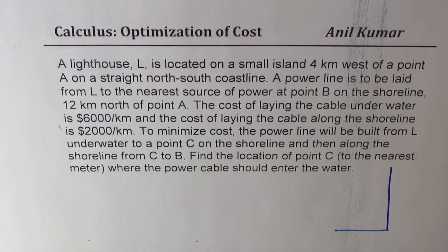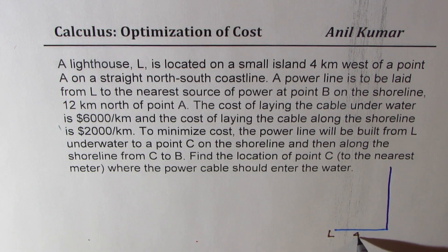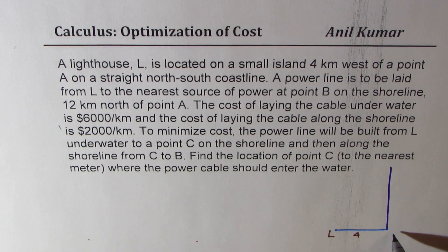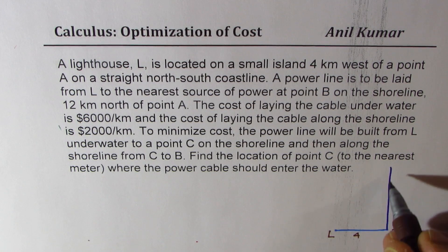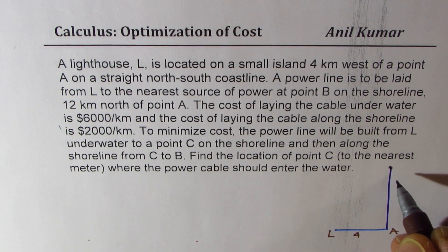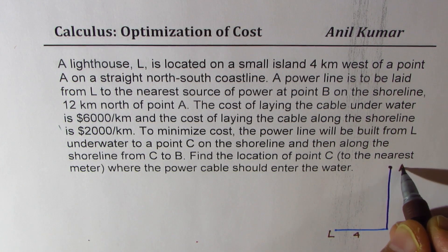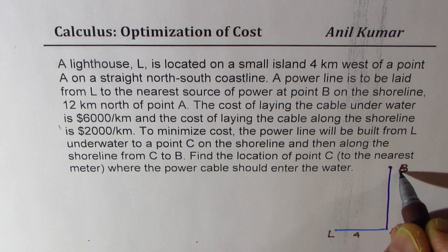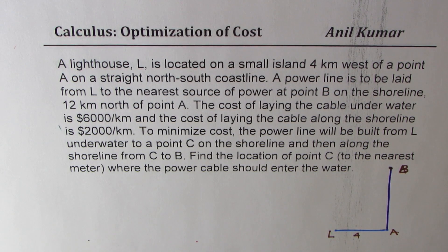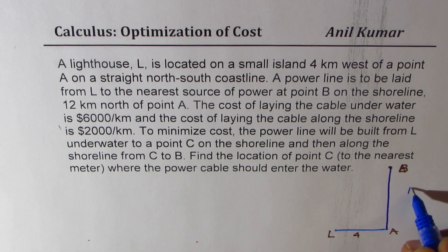What is given to us is that the lighthouse is 4 km from a point which is A on the shoreline, west of A. Now, going north, we have source of power at B. This source of power is 12 km from A, so this total distance here is 12 km.